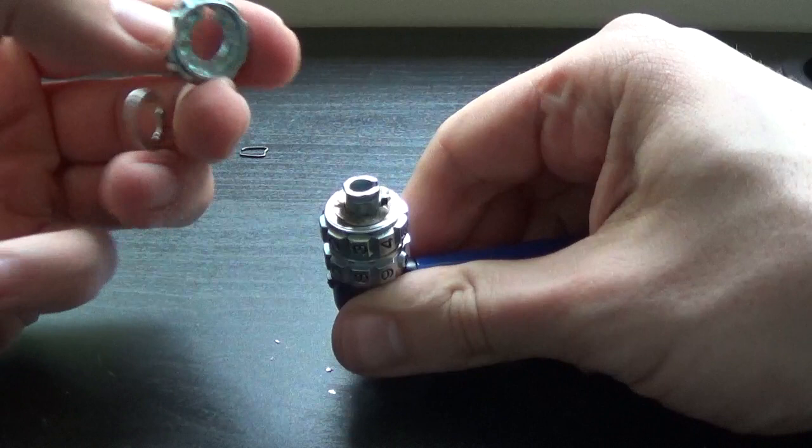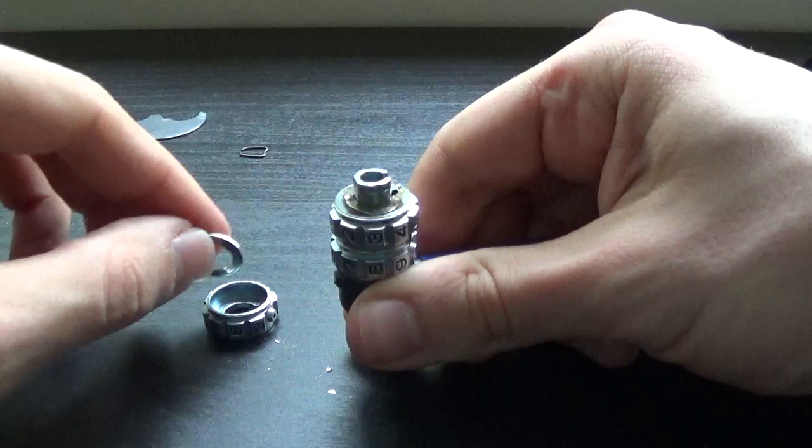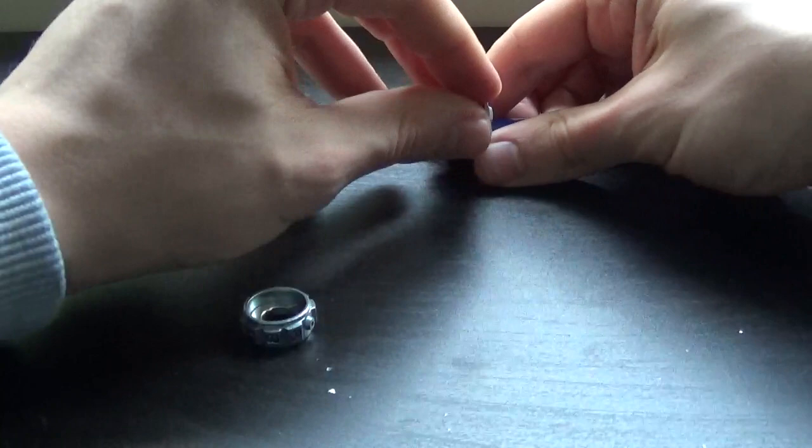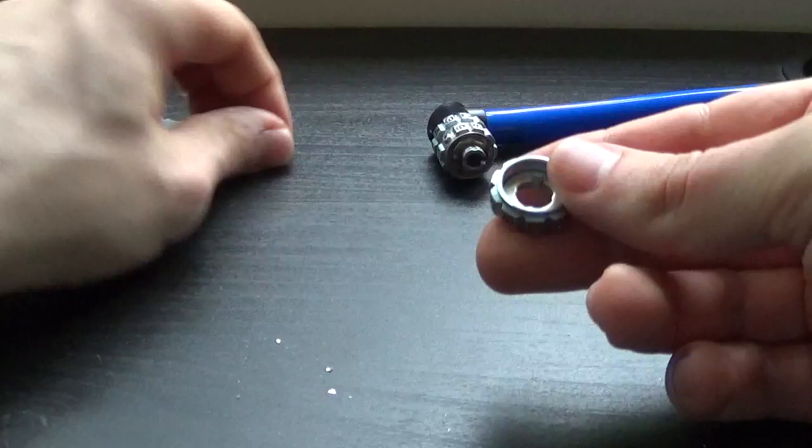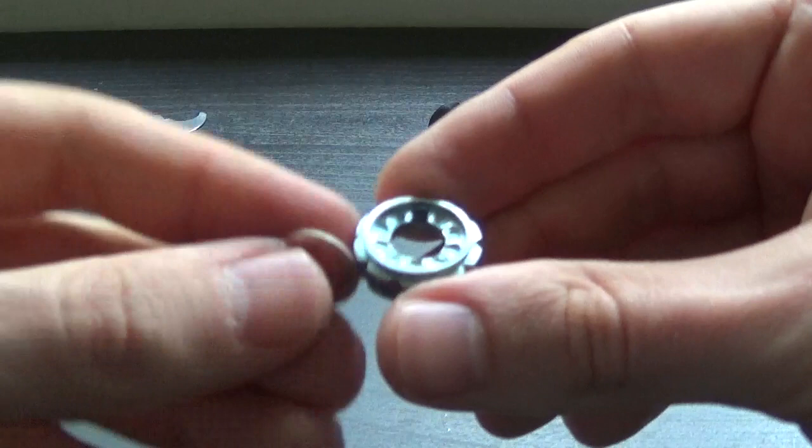We removed this little clip here, and then inside of the wheel, if you can see that, we have this washer that also has a gate in it like that.